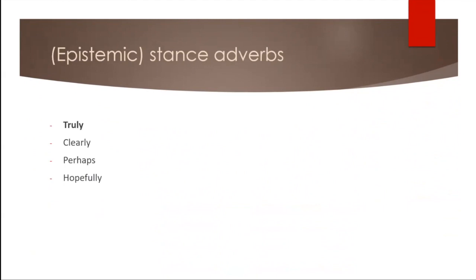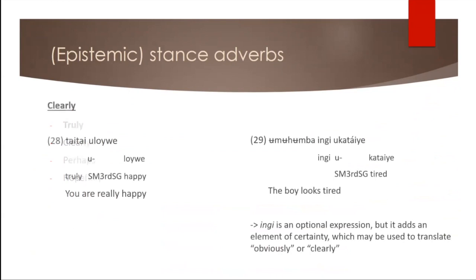So I've already covered the first of my stance adverbs, so I move on to the others now. I also looked at clearly and here again, we can see the thai thai, which is a sentence I'll come back to later as well. So that's one way of expressing clearly, but really doesn't exactly mean that, right? So an alternative way is to add the expression ingi, because that then contains the element of certainty, which obviously or clearly does in English. So in sentence 29, that would mean the boy looks tired, because just by looking at that boy, by seeing him, I know that he's tired.